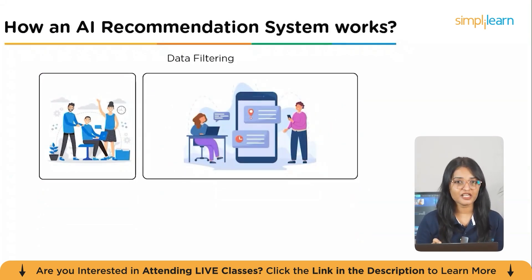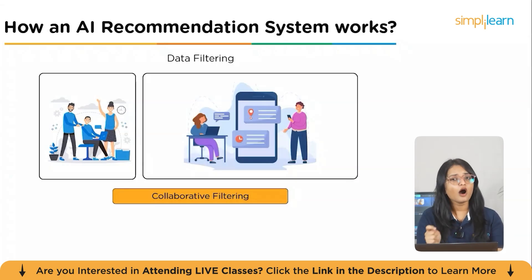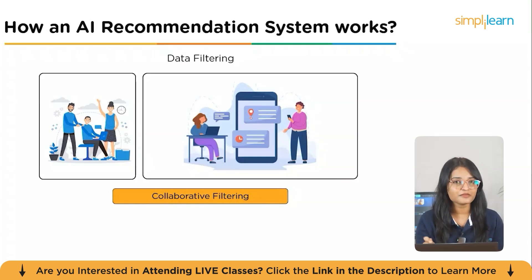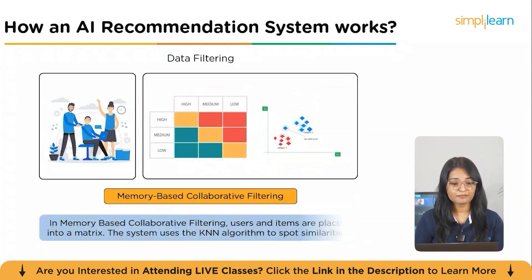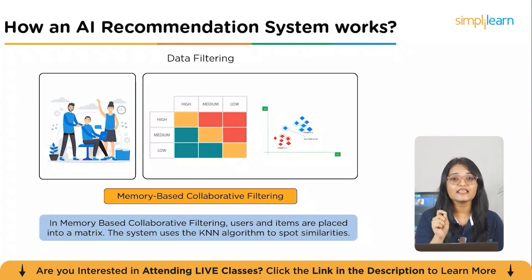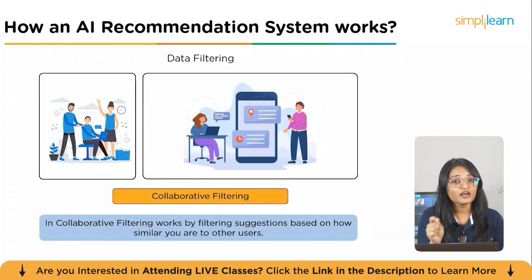There are three main types of filtering methods. The first is collaborative filtering, which works by filtering suggestions based on how similar you are to other users. The idea is simple: if people like you enjoyed certain items, chances are you'll enjoy them too. There are two sub-types: memory-based collaborative filtering, where users and items are placed into a matrix and the system uses the k-nearest neighbors algorithm to spot similarities — with item-based filtering comparing items by user interaction, and user-based filtering comparing you to similar users.